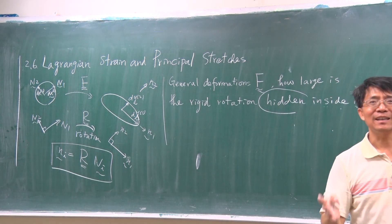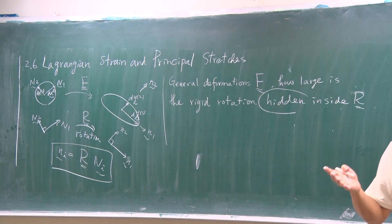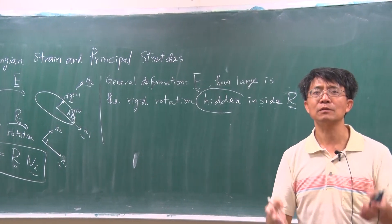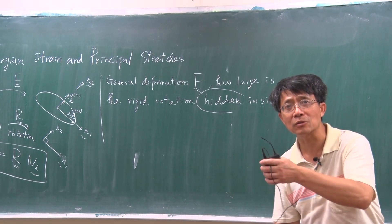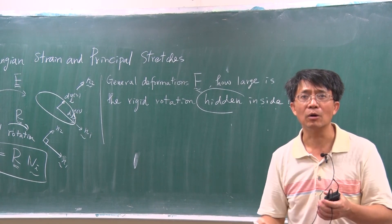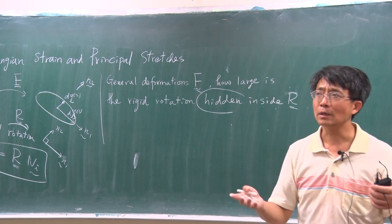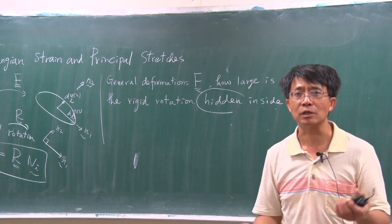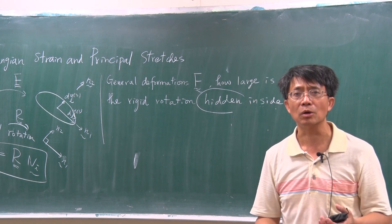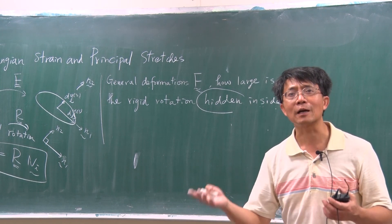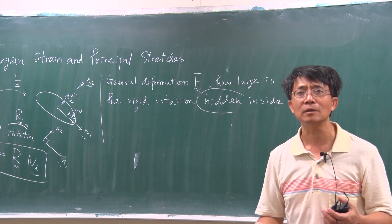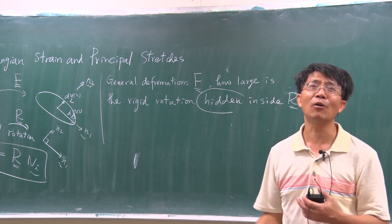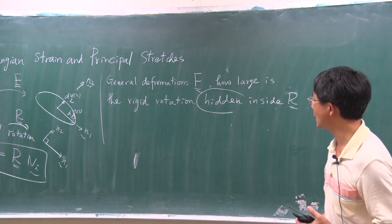In a general deformation process, there are shape changes, volume changes, and also rotation. They mix up together. We don't know, at first glance, how large is the rotation. And then after the computation, we get the matrix R, and then we know how large is the rotation.